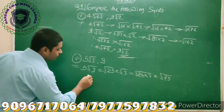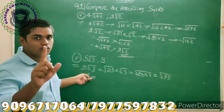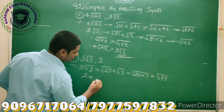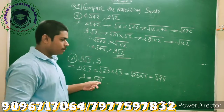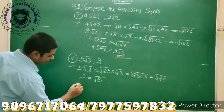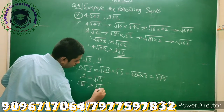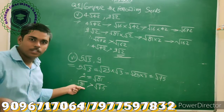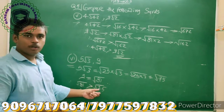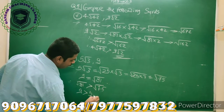The second is 9 itself, which we treat as a coefficient. So 9 can be written as √81. Now, 81 is greater than 75. Therefore, √81 > √75. The value √81 corresponds to 9, and √75 corresponds to 5√3. So here, 9 is greater than 5√3.